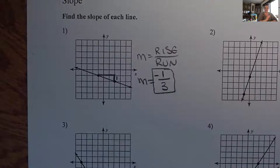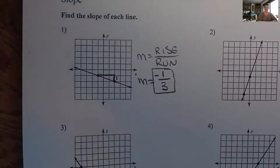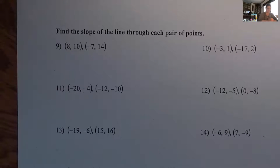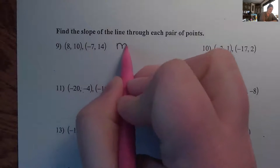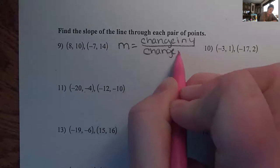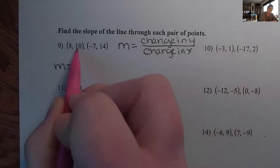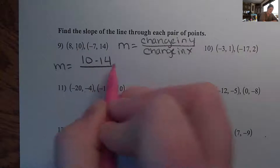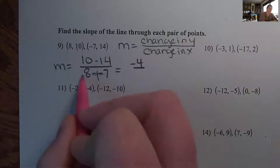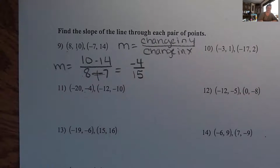Find two points, find your rise over your run, ask if it's negative or positive — that's how you do it with the graph. Now for an ordered pair: M equals change in Y over change in X, so M equals y minus y over x minus x. I'll do 10 minus 14 over 8 minus negative 7. Two minuses right next to each other connect to make a big plus. 10 minus 14 is negative 4, and 8 plus 7 is 15. Nothing goes into both 4 and 15, and there's only one negative sign, so the answer is negative four-fifteenths — leave that as a fraction.